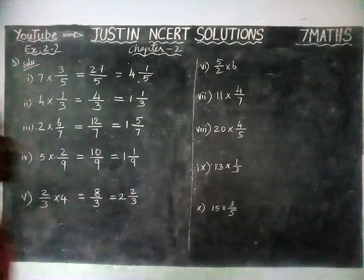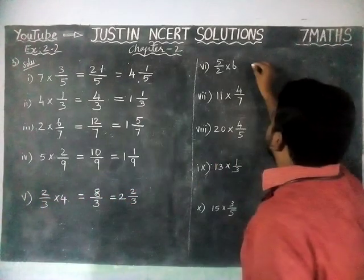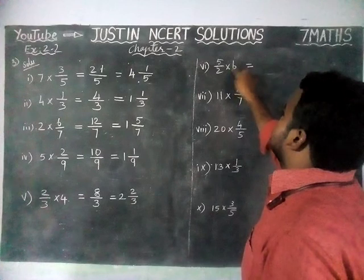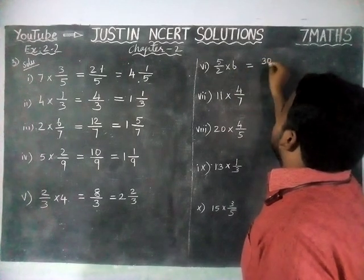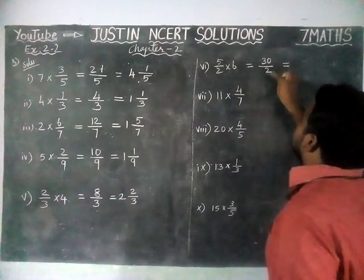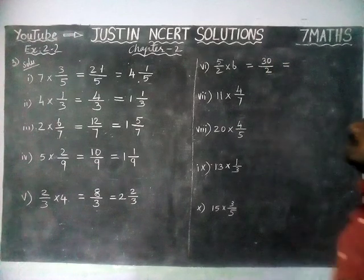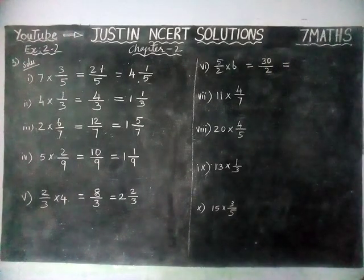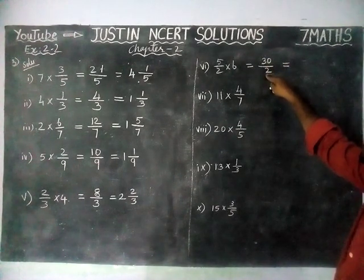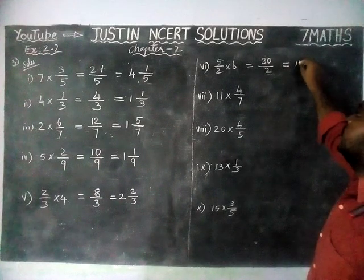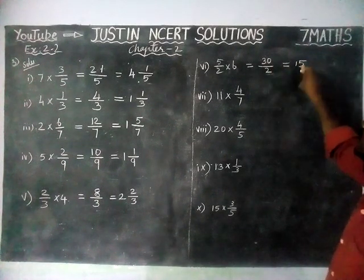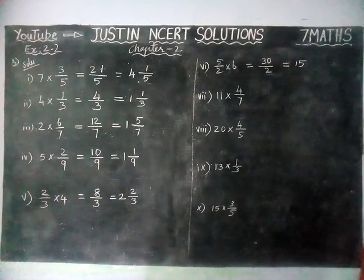Next, 6th question: 5 sixes are 30, divided by 2. If it is possible to simplify, we can simplify. Here 30 divided by 2 — we simplify using the 2 times table. 15 twos are 30, so we have no remainder, and we write the whole number 15.